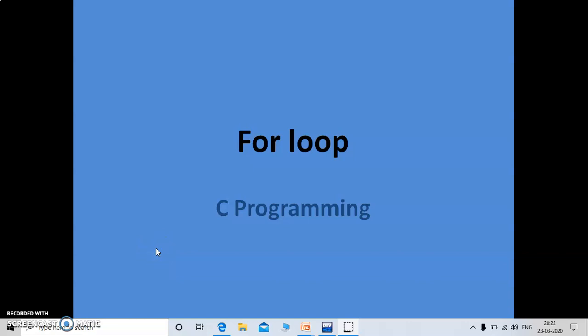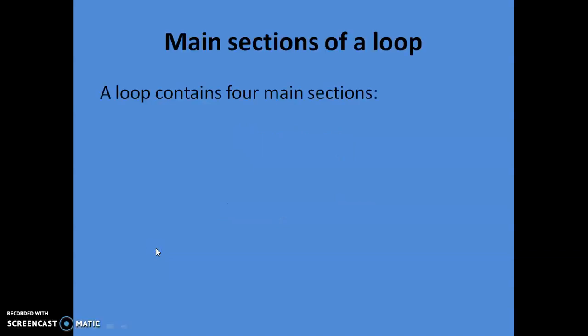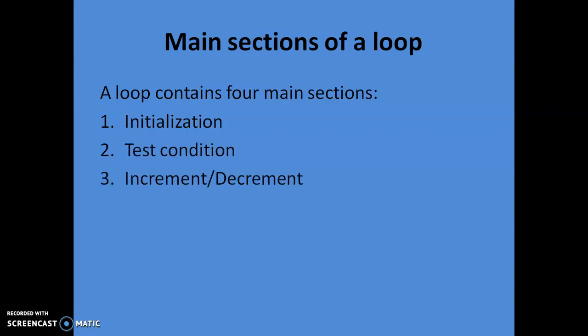Good morning. Today we are going to discuss the for loop. A for loop contains four main sections: first is the initialization of the loop, second is the test condition, third is increment or decrement, and fourth is the body of the loop.